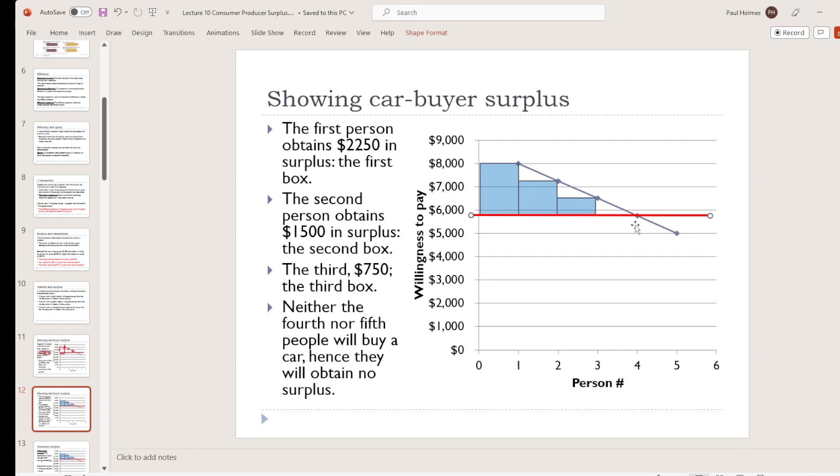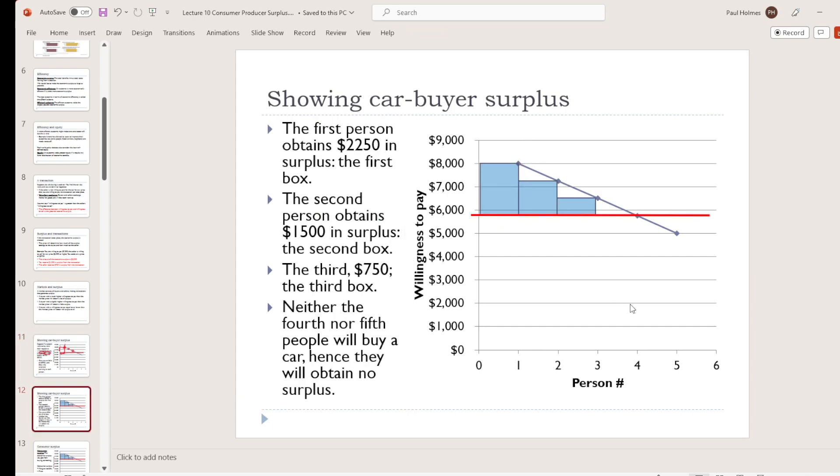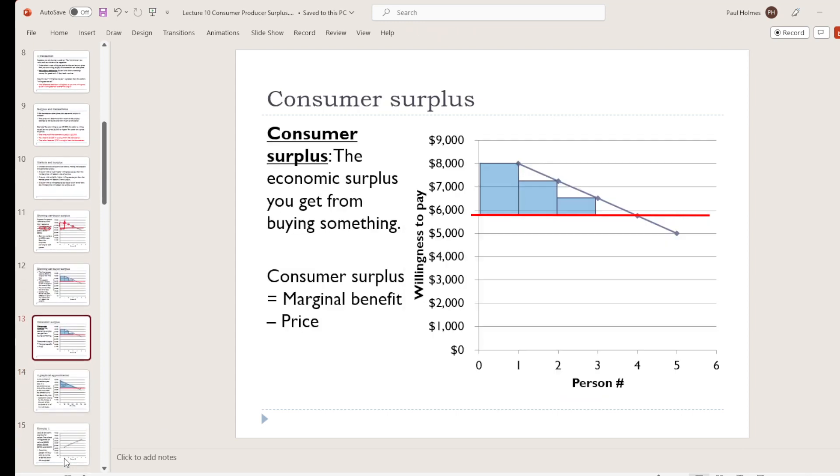Our fourth person is an interesting one to figure out what to do with. Our fourth person was willing to pay exactly the market price. So now whether they trade or not, they can't get any surplus. We typically make the assumption that they do go ahead and trade. There's a couple of technical reasons for that, but mostly the math works out a little bit easier if we do that. So we would just assume that they would trade, but they would still obtain no surplus. Our fifth person definitely can't get a surplus. They're only willing to pay $5,000 for the car, and the car costs $5,750. There's no way that they can trade.